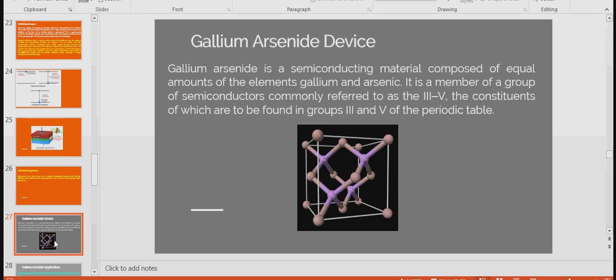What is a Gallium Arsenide Device? The devices manufactured using Gallium Arsenide are called Gallium Arsenide Devices. Gallium Arsenide is a semiconductor material composed of equal amounts of the elements Gallium and Arsenic. It is a member of a group of semiconductors commonly referred to as the 3rd and 5th in the Periodic Table. A sample of Gallium Arsenide Molecule is shown in Figure.